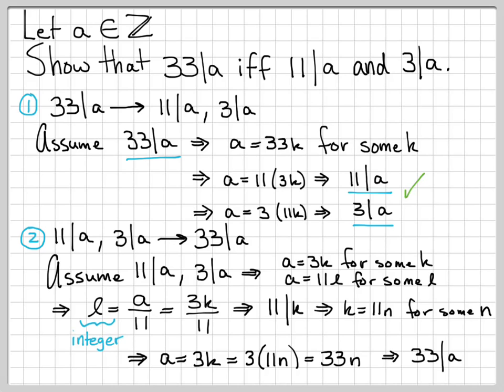These two things, 11 divides a and 3 divides a, implies that 33 divides a. And you can see in the proof, we used both of those assumptions. We wrote a equals 3k and a equals 11L, and we ended up using both of those to get to the fact that 33 has to divide a. So that is the proof.